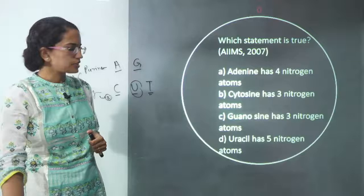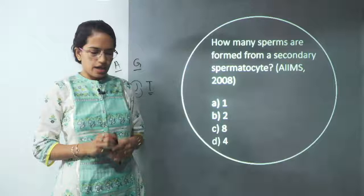Pyrimidines have two nitrogen atoms — that's the important thing to remember. Siddam had the correct answer, so you get a surprise from our side. Next question.